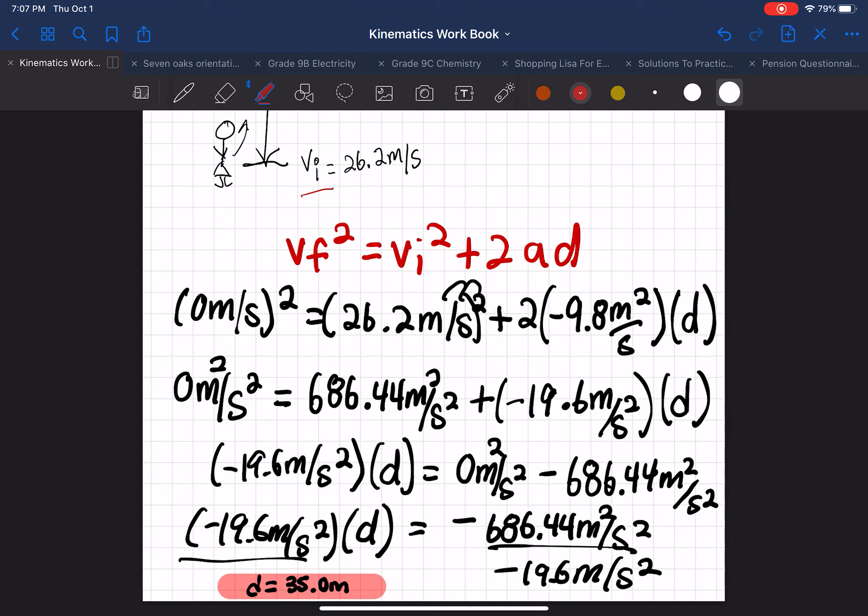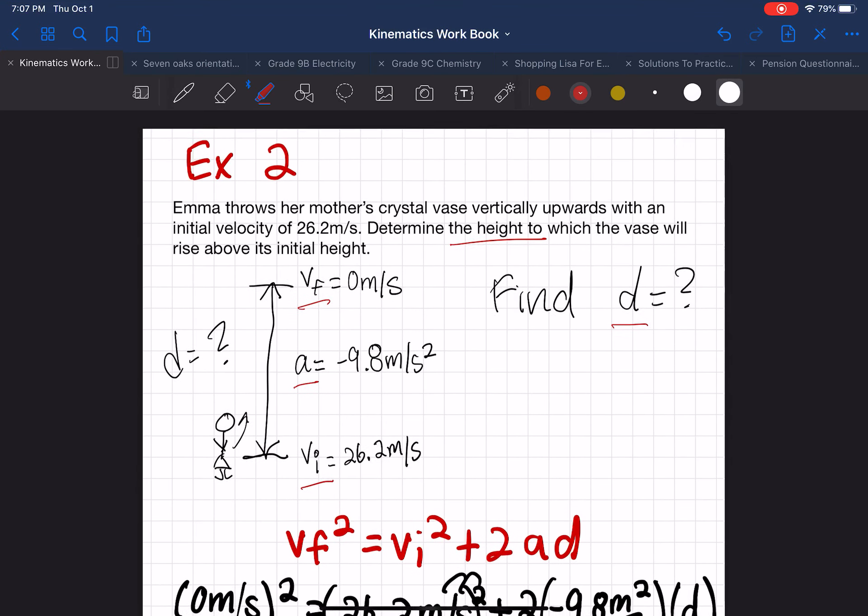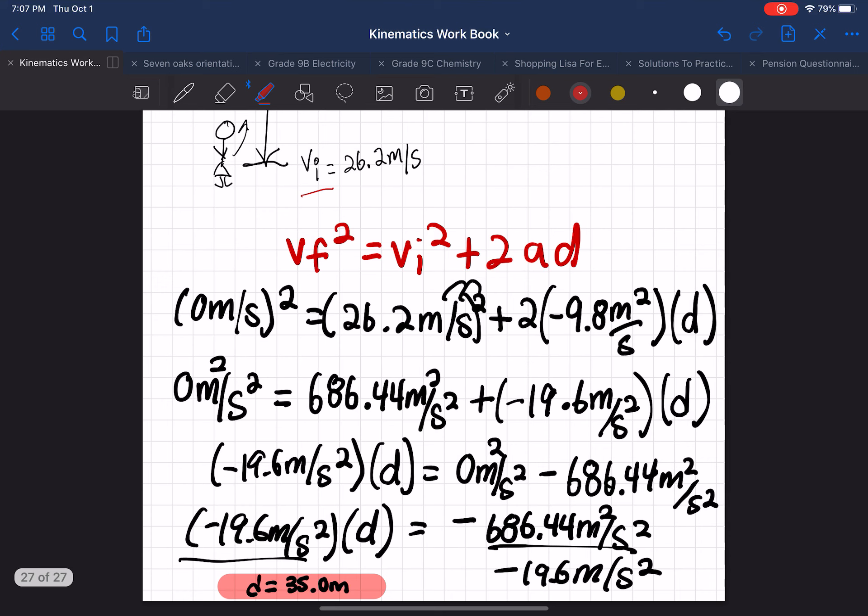And I think it's definitely reasonable because the vase is thrown with a speed that is approximately 30 meters per second, right? Upwards. And that speed with the acceleration coming down, I think it's possible that she can throw it 35 meters up. Maybe the glass vase, or the crystal vase isn't that heavy. So, well, it sounds reasonable.